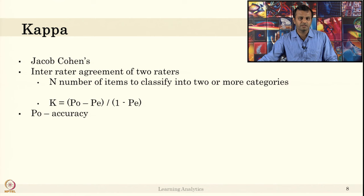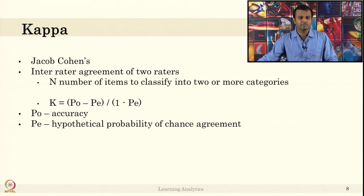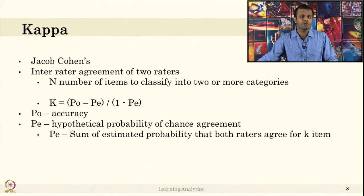PO is the accuracy from the confusion table. We can compute the accuracy which we computed in the last class. PE is the hypothetical probability of chance agreement. What is the hypothetical probability that both raters will agree? It is like what is the minimum value they can agree. How to compute PE? Sum of estimated probability that both raters agree for a K number of items. We will see an example how to compute Kappa score.